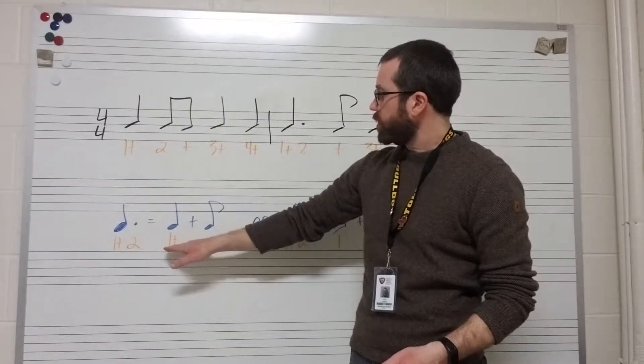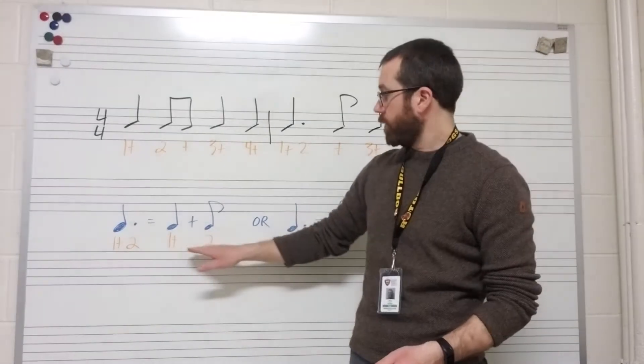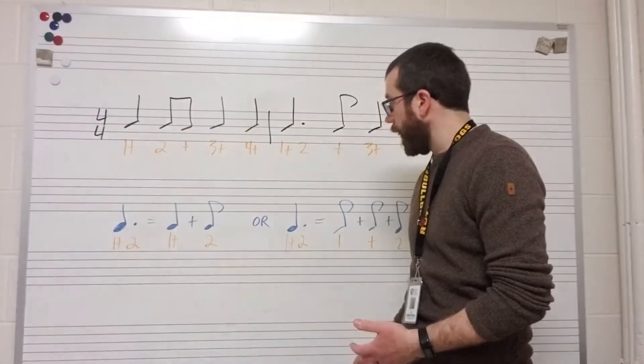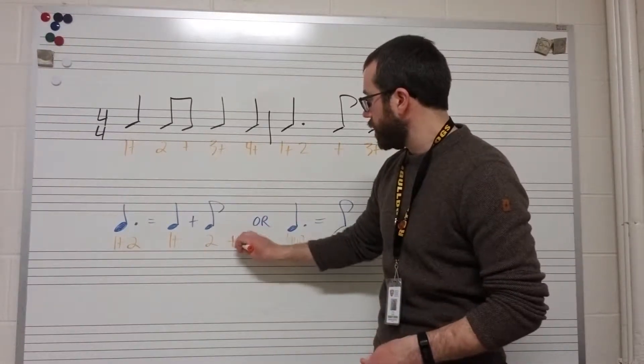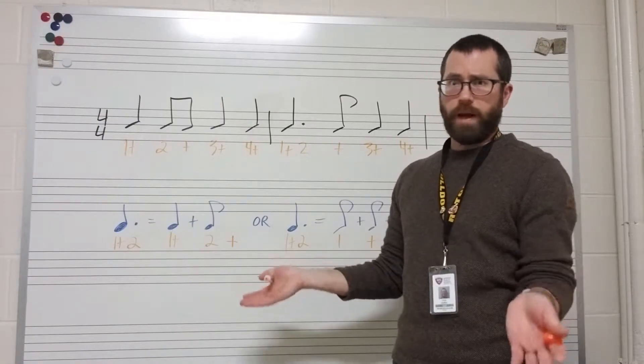Now, on the other side of the equation, we have a quarter note, which is counted as one and. And then we have an eighth note that's counted as two. The other and will be over here, either underneath an eighth rest or underneath another eighth note.